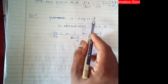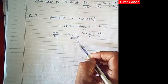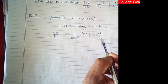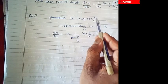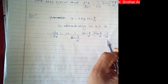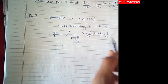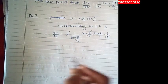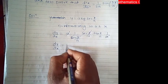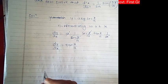So first we differentiate log(sec(x/a)), which is (1/sec(x/a)), because log(x) differentiation is 1/x. Then differentiation of sec(x/a) is sec(x/a)·tan(x/a). Again applying the chain rule, differentiating x/a gives 1/a. So this sec(x/a) and the 'a' cancel, and therefore dy/dx = tan(x/a).